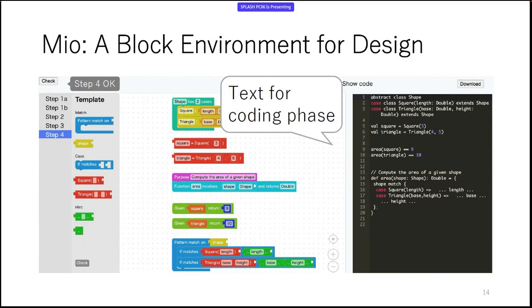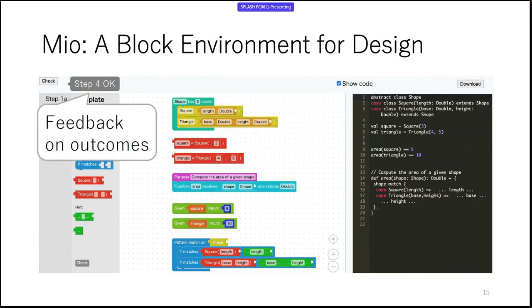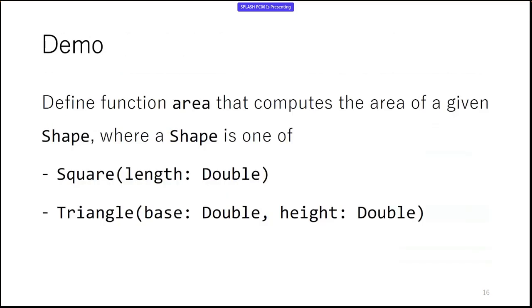First, MEO provides blocks for composing design artifacts, so the programmer does not need to remember the syntax used in the designing steps. Second, MEO generates the text representation of the blocks on the fly, so the programmer can see their progress and use the generated code in the coding steps. And thirdly, MEO provides feedback on the outcomes of designing steps, so the programmer will know at each step whether they are doing things right.